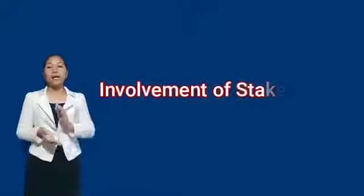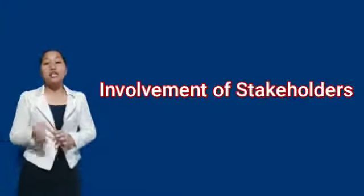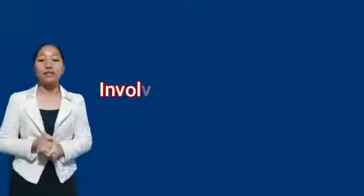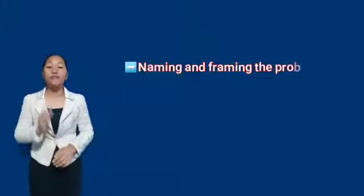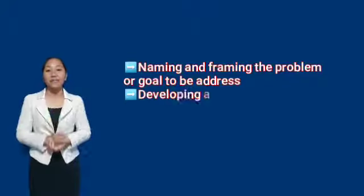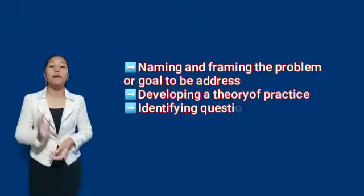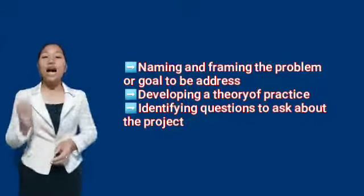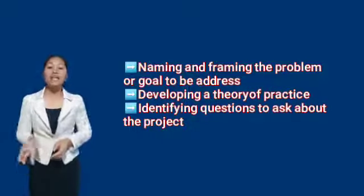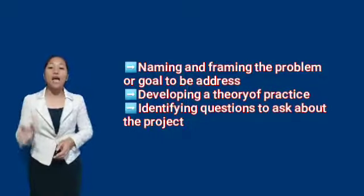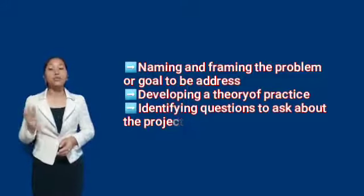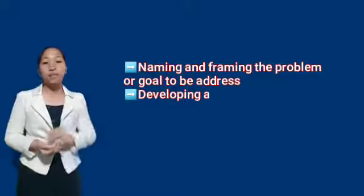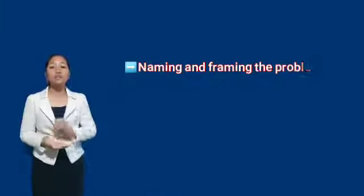In participatory evaluation, stakeholders should be involved in: first, naming and framing the problem or goal to be addressed; next, developing a theory of practice or process logic model for how to achieve success; and identifying the questions to ask about the project and the best ways to ask them. These questions will identify what the project means to do and therefore what should be evaluated.